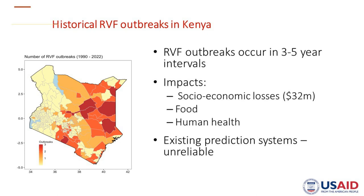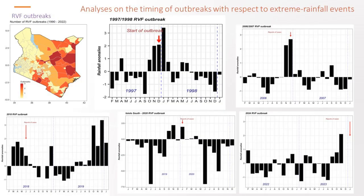We think if we do much more work looking at distribution of rainfall, temperature, and humidity, we can then be able to buy more time for action. So what we have done is to look at up to five outbreaks which have occurred in Kenya over the last ten years, and there's a pattern of rainfall that we have been seeing.